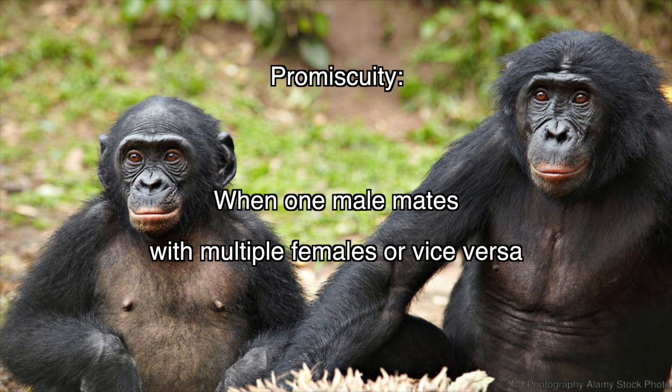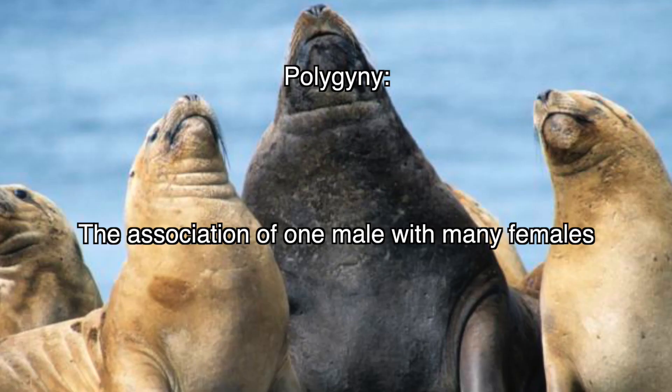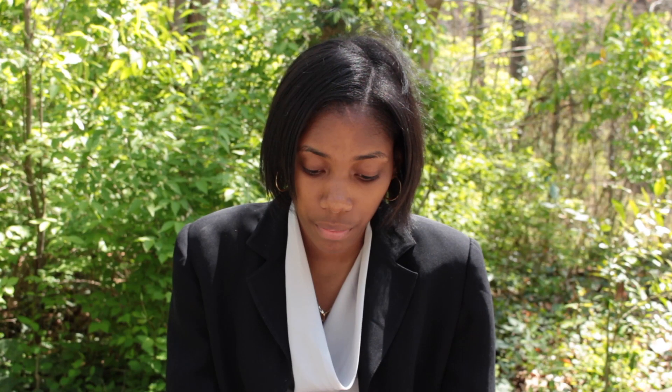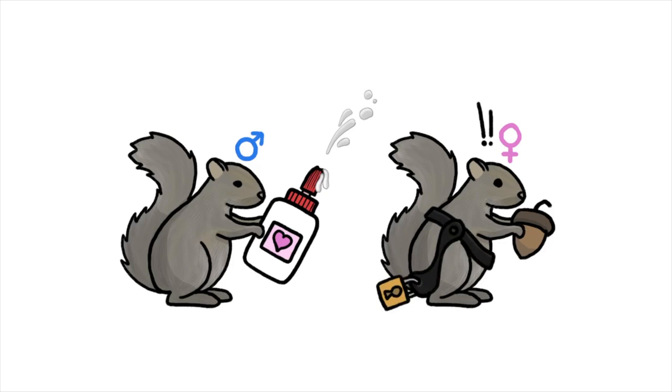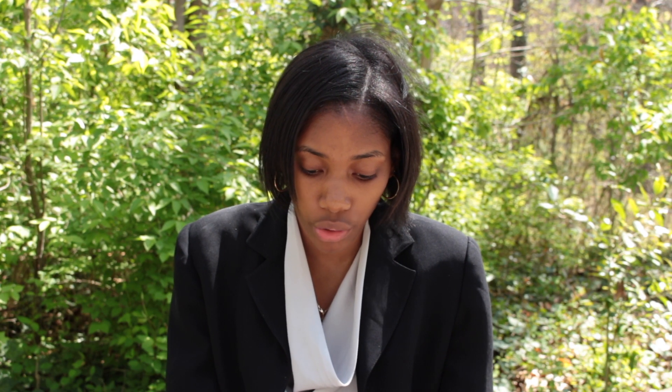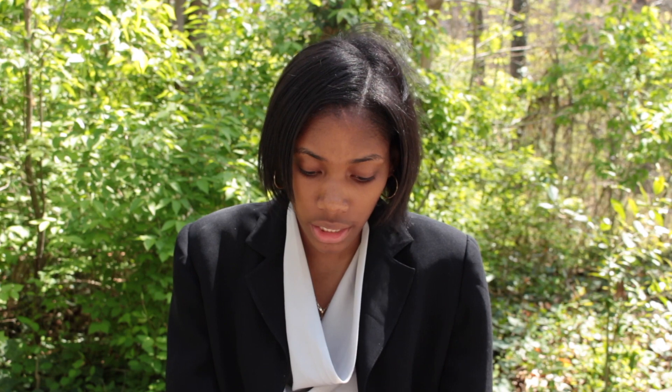Promiscuity is when one male mates with multiple females and vice versa. Polygyny is the association of one male with many females. This is most common in mammals, but also found in a few birds, insects, and other animals. It focuses on male-male competition because the females are only paired with one male. A copulatory plug is a secretion or object left by the male in the female's reproductive tract to prevent further matings by the female.